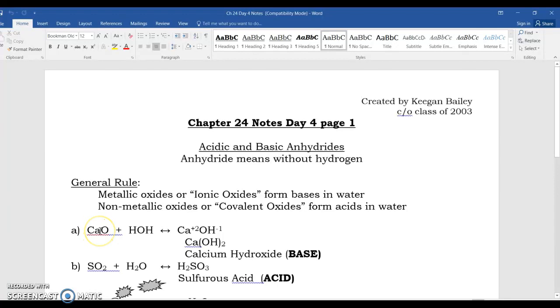For example, calcium, found in alkali earth metals, and calcium oxide is what we call an anhydride. It means without the H, without hydrogen. When you put an anhydride in water, it makes a base.